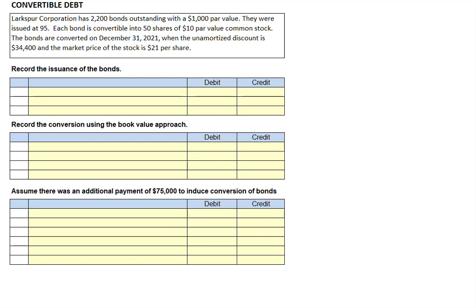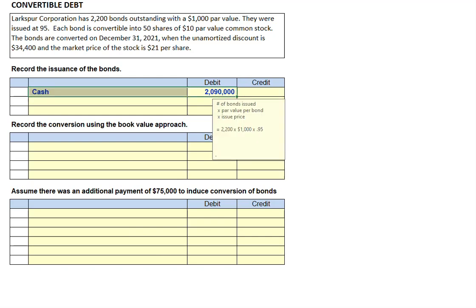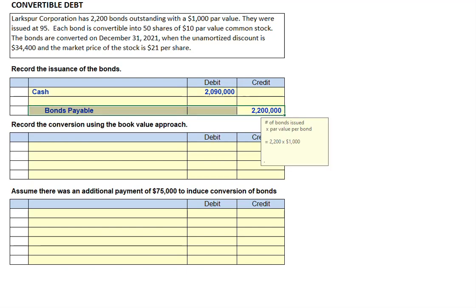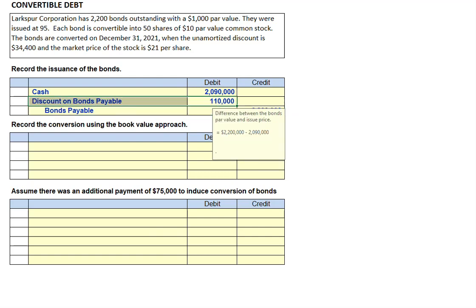Let's look at the entries we would have made when the bonds were issued. The bonds were issued at $95, so we are going to receive 2,200 bonds times $1,000 par value times 0.95, giving us $2,090,000 in cash. Like always, we record bonds at their face value — the full $2,200,000 — and the difference is debited to the discount on bonds payable.